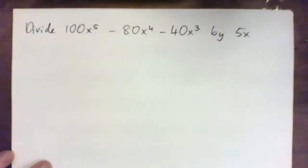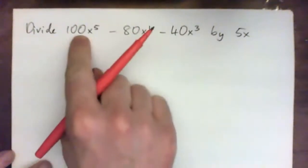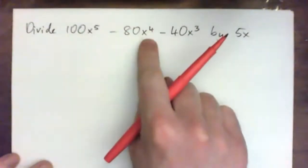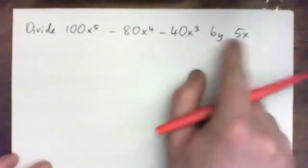Okay, so everybody watching at home, we've got to divide 100x to the 5 minus 80x to the power of 4 minus 40x cubed by 5x.